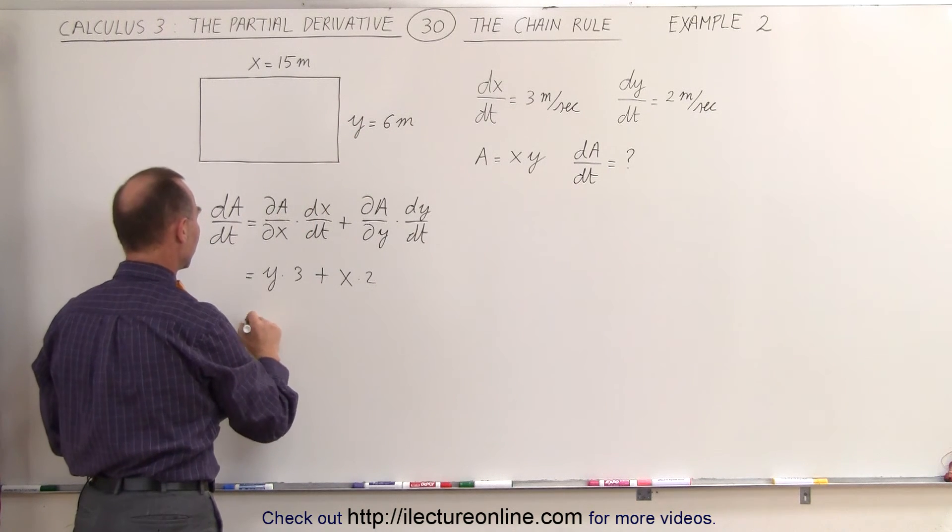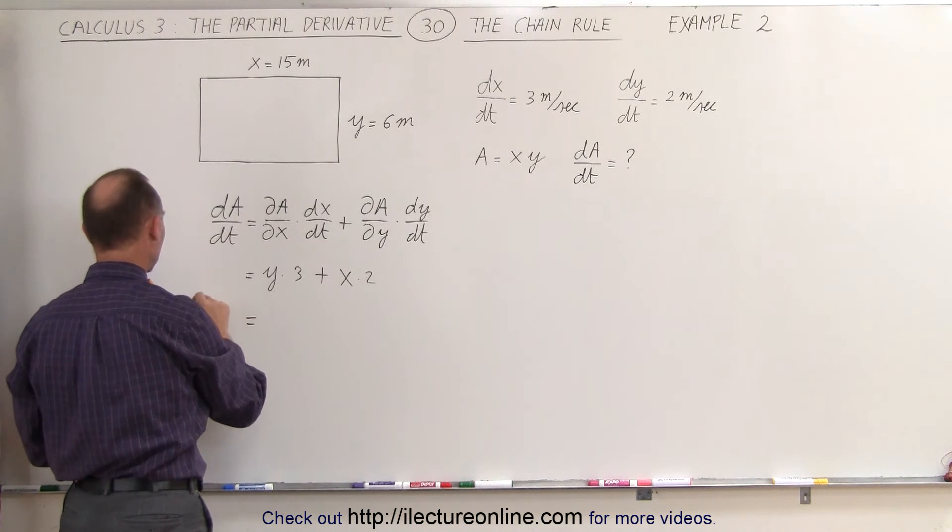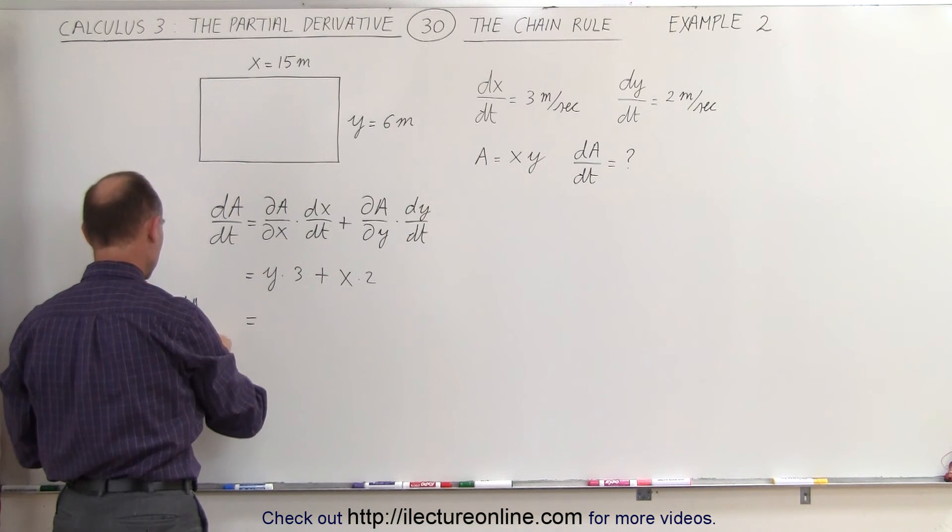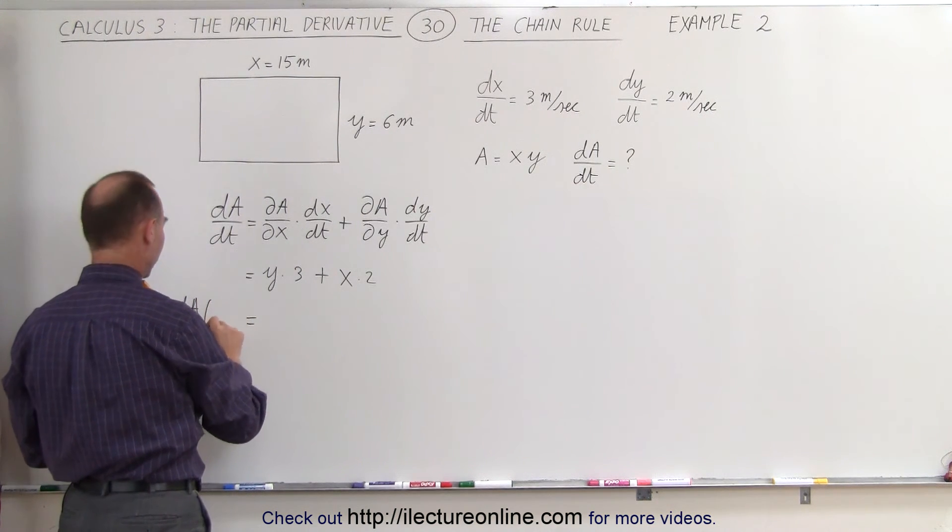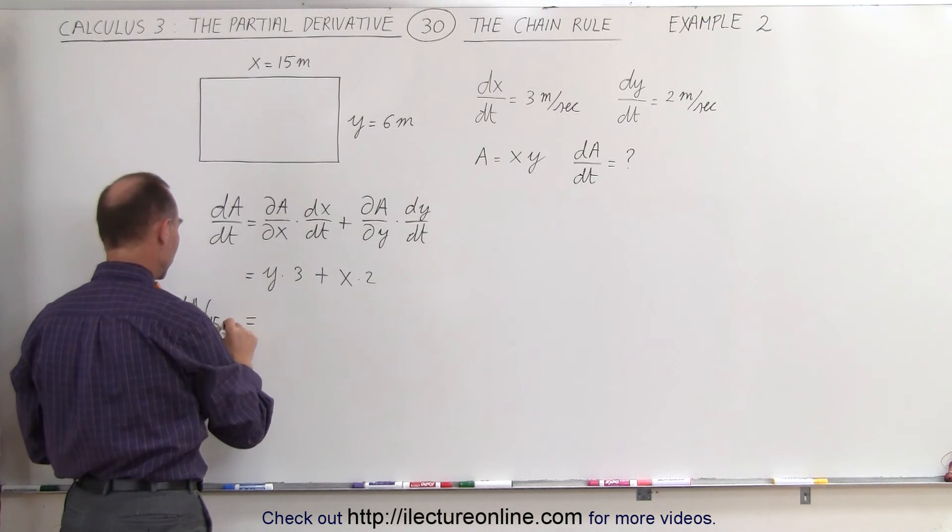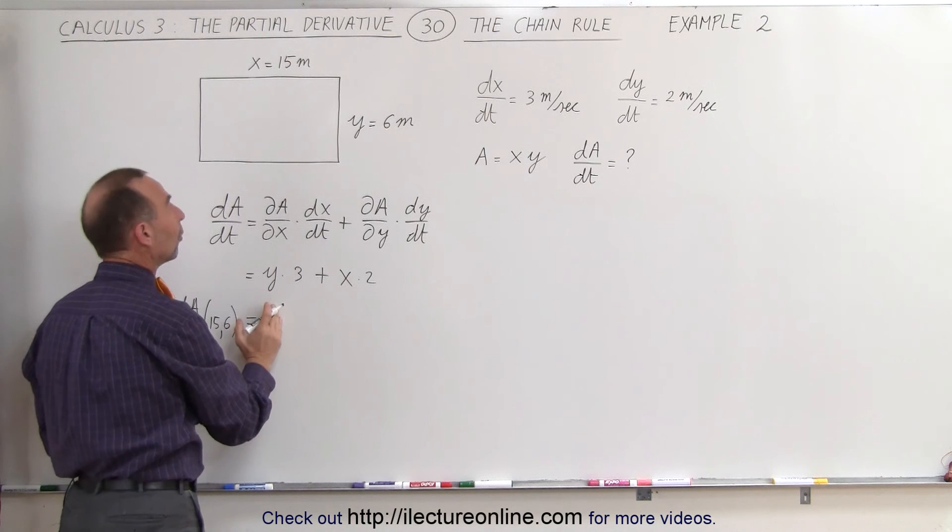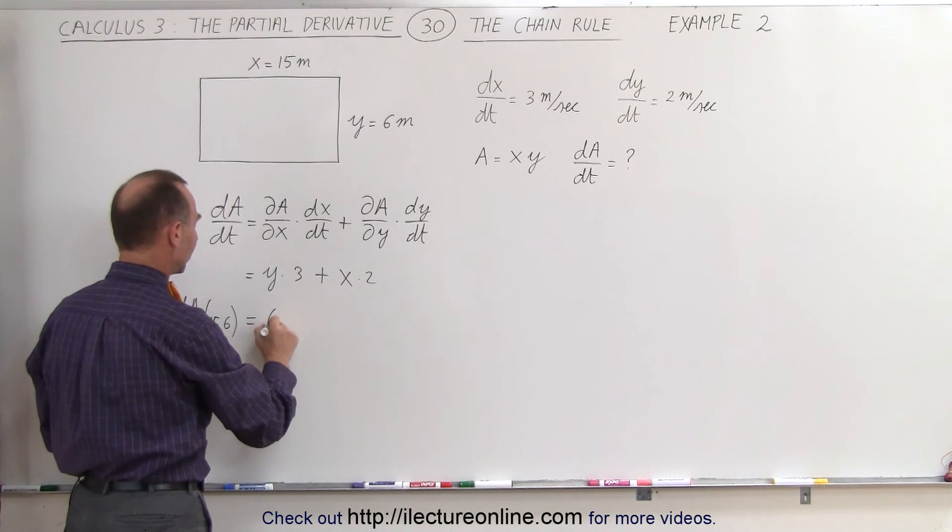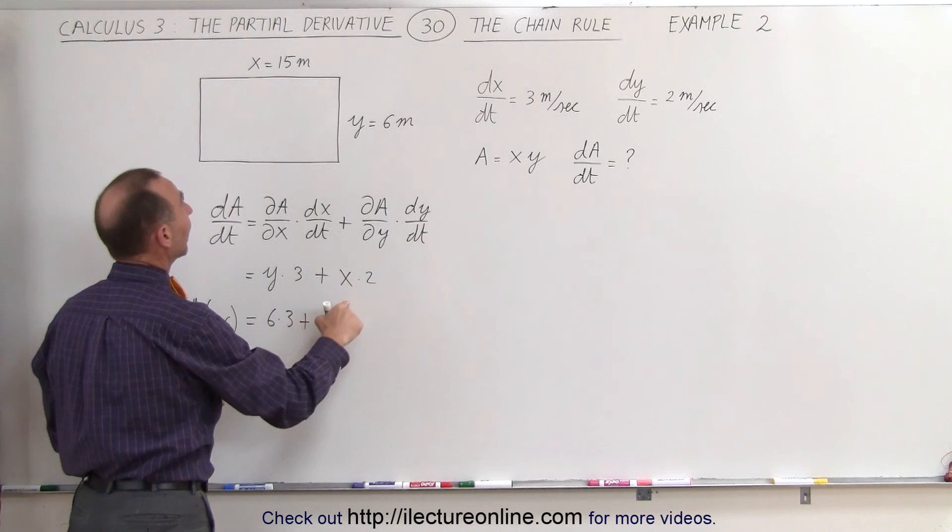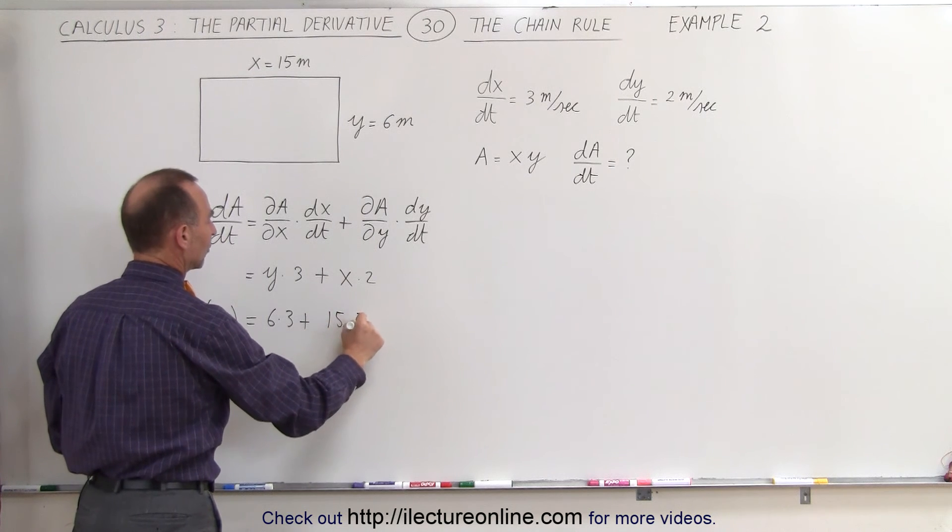So we plug those values in. The dA/dt when x equals 15 and y equals 6 is equal to, y would then in this case be equal to 6, 6 times 3, plus x is 15 times 2.